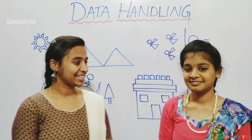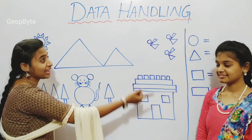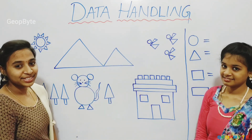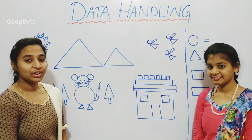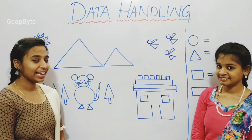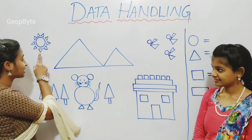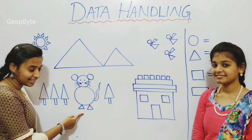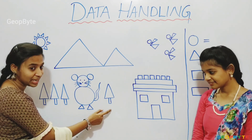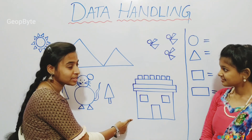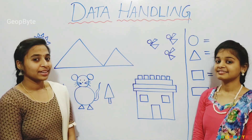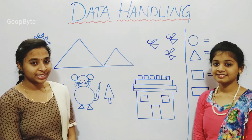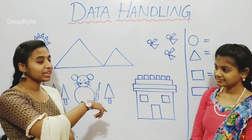Hey kids, see here we have a drawing. In this drawing, we have few figures like sun, mountains, a cat, few trees, a house and birds. Now let us count how many shapes are there in these figures.